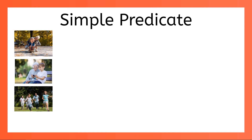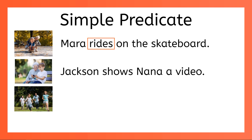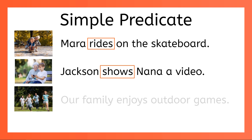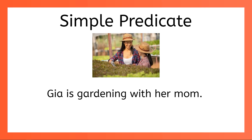Let's identify the simple predicates in these sentences. Mara rides on the skateboard — what is the simple predicate? Rides. Jackson shows Nana a video — simple predicate? Correct, shows. Last one: our family enjoys outdoor games. Did you find it? Enjoys is the simple predicate. Let's try one more. What's the simple predicate in the sentence Gia is gardening with her mom? The simple predicate is the verb phrase is gardening.